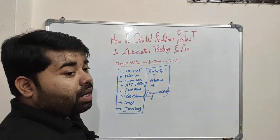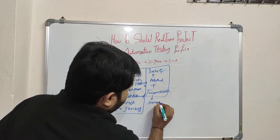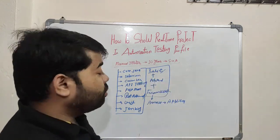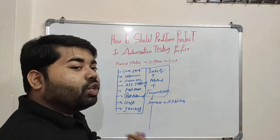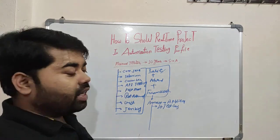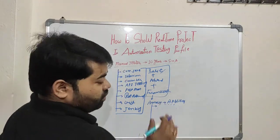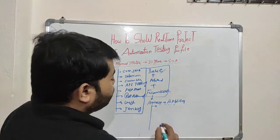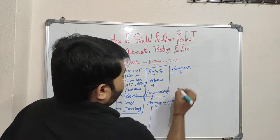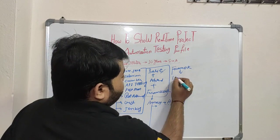For example, you are a manual tester who worked on the Amazon application. In 10 years you know all the functionality of Amazon. You know how the Amazon application works. Using the framework you learned, you can automate whatever functionality and test cases you have. You can automate at least 50 test cases using that framework.